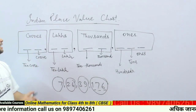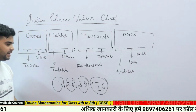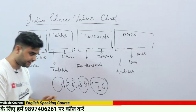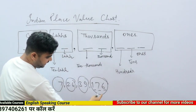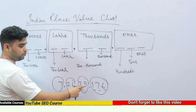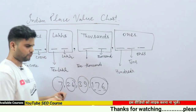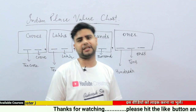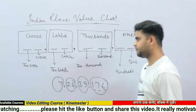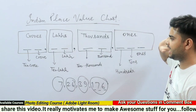In contrast, in the International place value chart, after three digits there is a comma, and then again after three digits there is a comma — not after two. We will talk about the International place value chart later, but for now it's important to know and memorize the Indian place value chart.